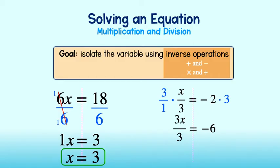Okay, almost there. Reducing the left-hand side, 3 over 3 becomes 1 over 1. We can write this as 1x or just x. x is equal to negative 6. Great!